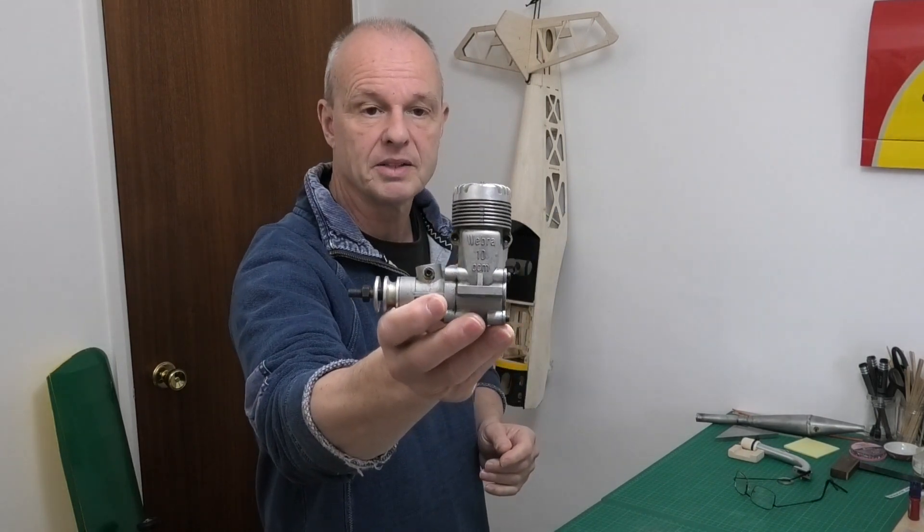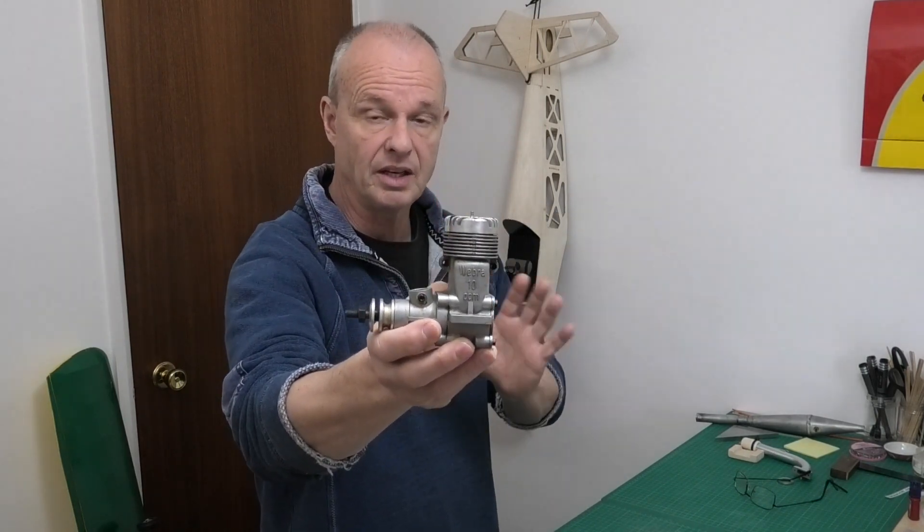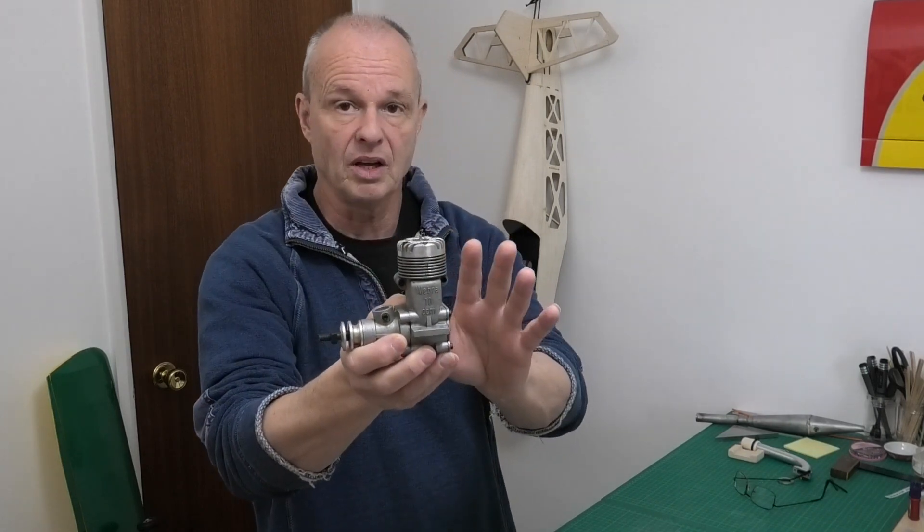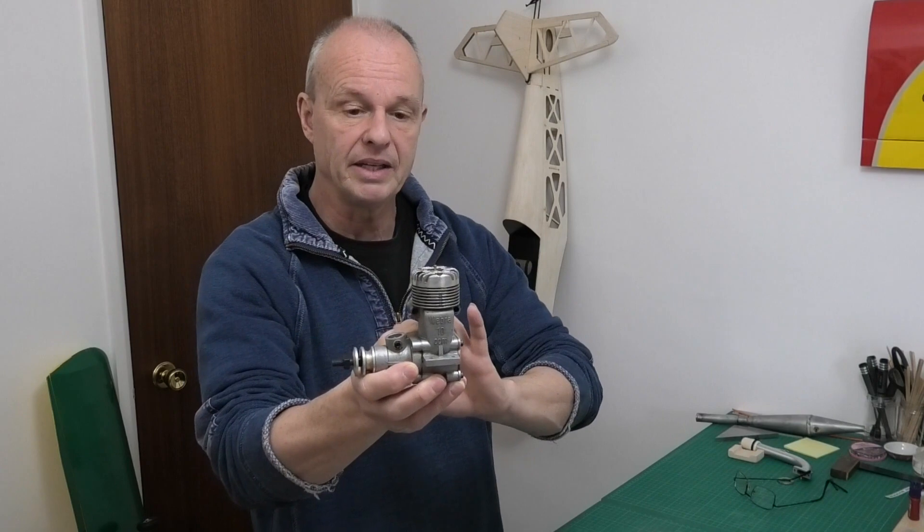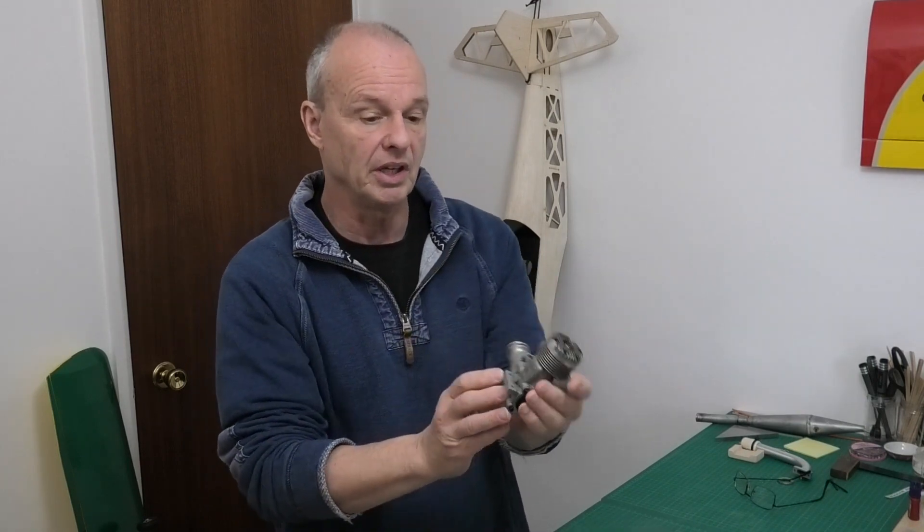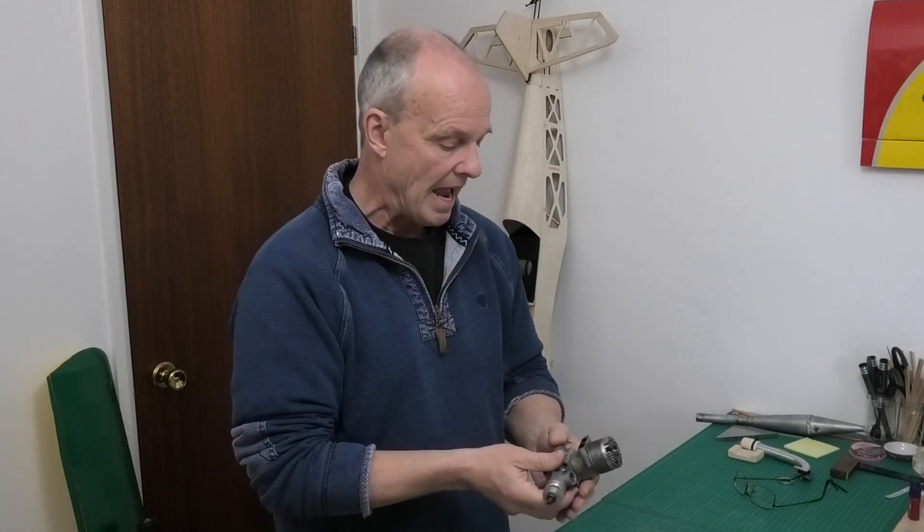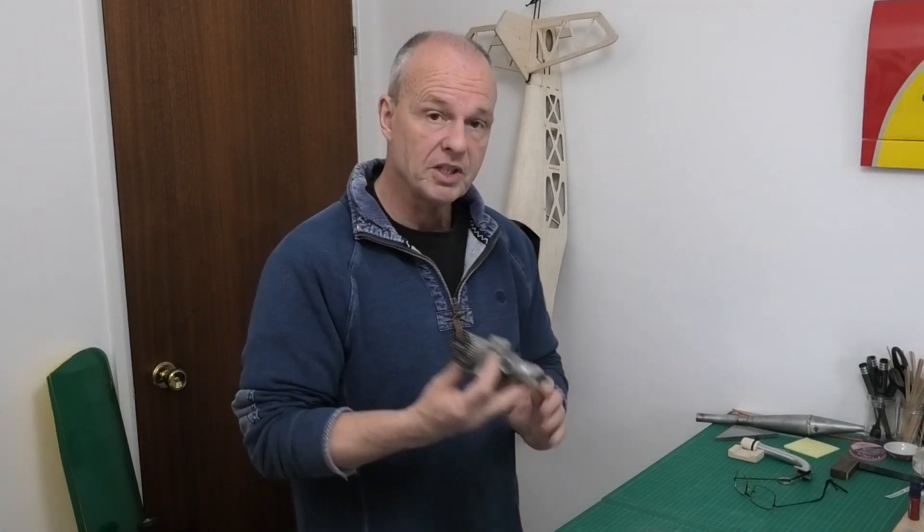I've got this lovely old Weber Silver Line made in Germany, as the early Webers were. The Silver Lines were only ever made in Germany whereas some of the later ones, the Speeds, were made in Austria. This is a 60 size engine, 10cc, and it's got a cross flow piston with a baffle. I'm going to strip this down and show you the piston and how to safely get that ring on and off without any problems.